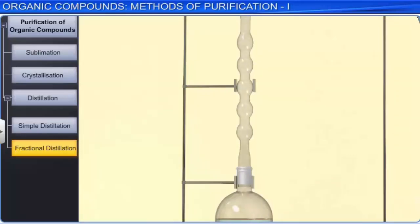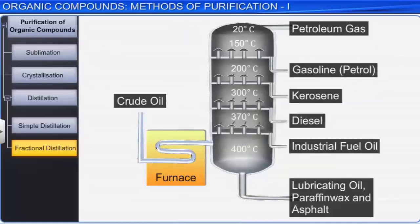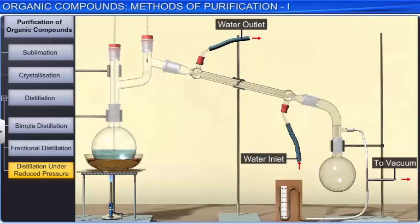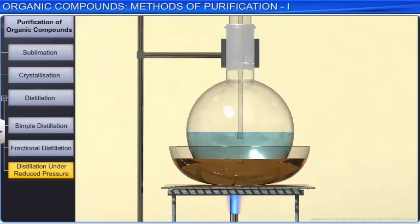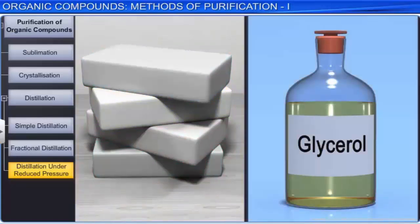Fractional distillation is used in the separation of different fractions of crude oil in the petroleum industry. For liquids with very high boiling points, or liquids that decompose at or below their boiling points, distillation under reduced pressure is used. In this method, the pressure on the liquid is reduced with a water pump or vacuum pump, reducing the boiling point of the liquid. In soap industries, glycerol is separated from spent lye using this method.